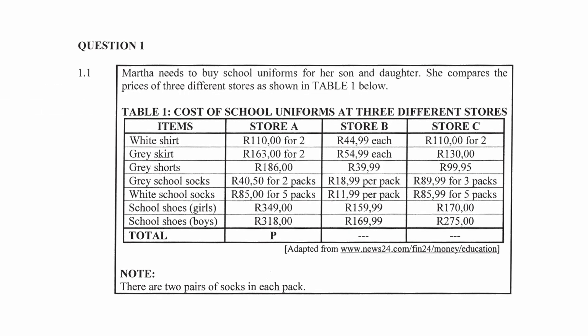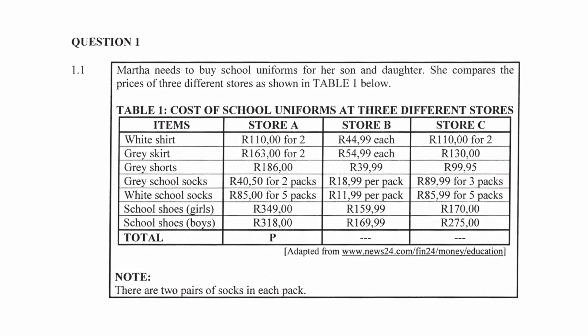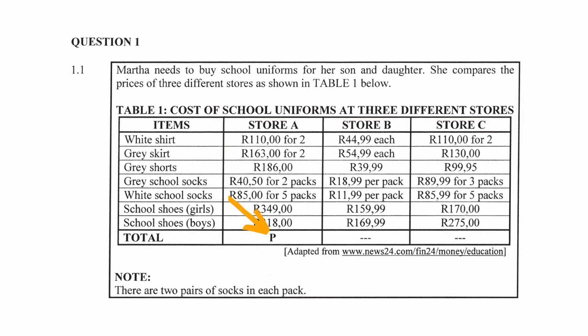You are given a table that shows the cost of school uniforms at three different stores. In the first column, you are given the type of clothing items to be purchased. The second, third, and fourth columns list the prices of each item for Store A, B, and C. You are also given an unknown value P that will have to be calculated. Note that there are two pairs of socks in each pack.